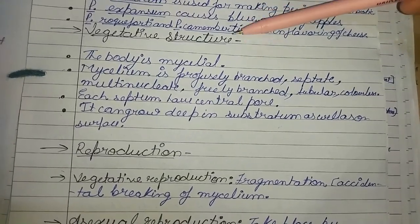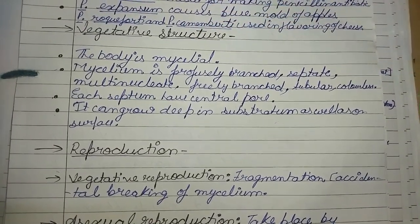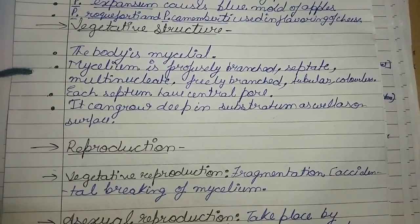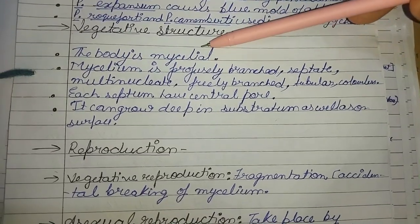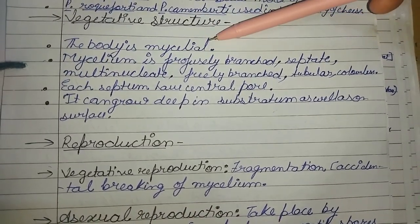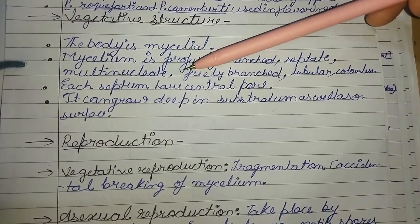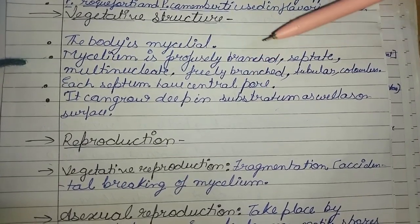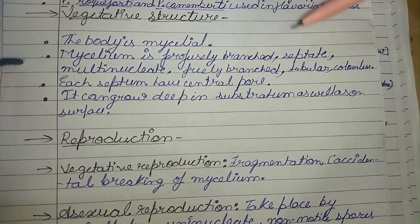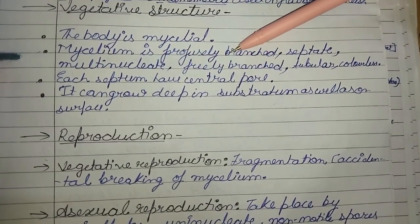Let us now talk about the vegetative structure. The body is mycelial. As you know, the basic characteristic of a fungus is the mycelium, so its body is also mycelial. The mycelium is profusely branched and septate. It is multinucleate, freely branched, tubular and colorless as well. It consists of septum and each septum has a central pore.